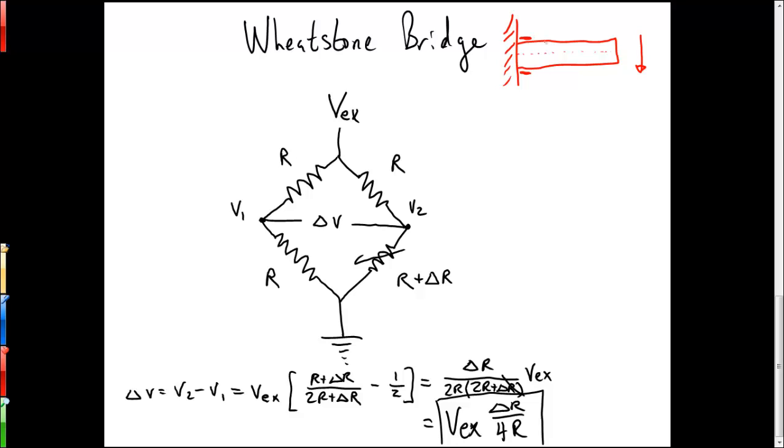The nice part about this is that any temperature effects will affect both of the strain gauges in the same manner, and so that won't affect our voltage at V2. So what we do then is we attach the top strain gauge down here where the original strain gauge was, and we add our second strain gauge in the other half of that leg of the Wheatstone bridge.